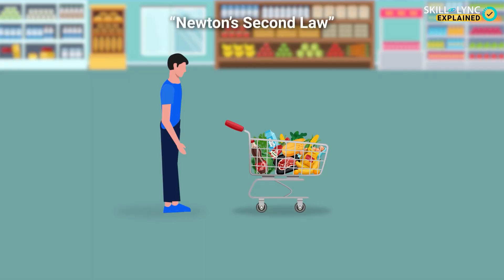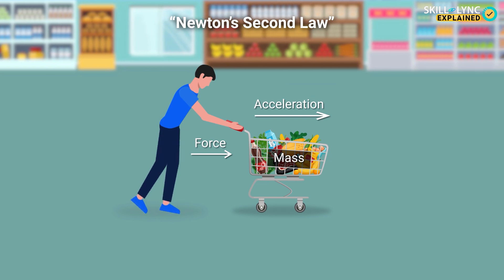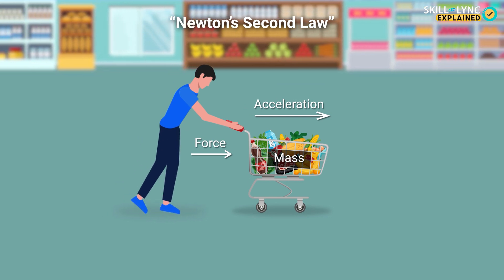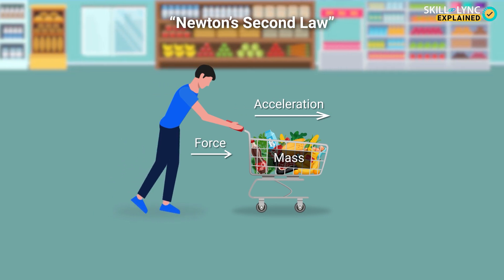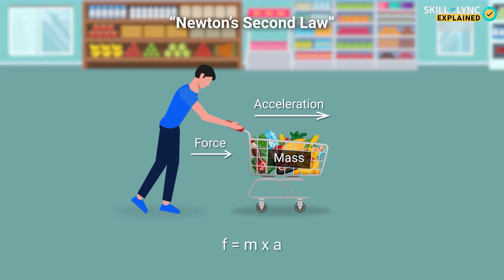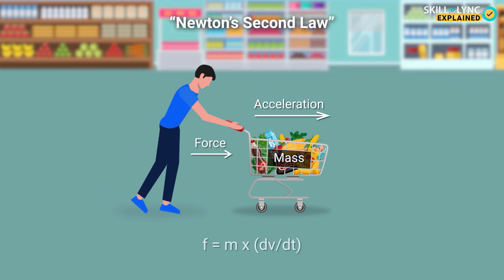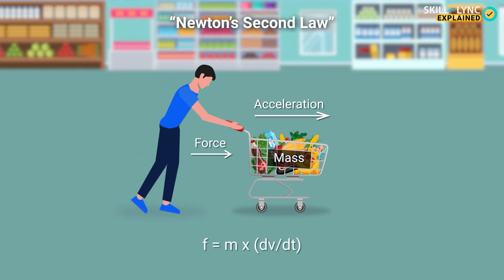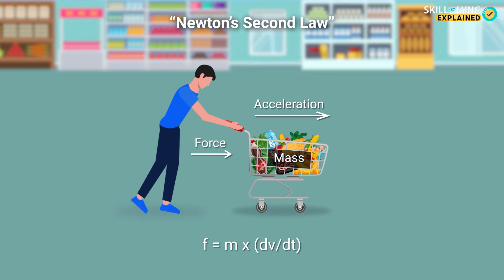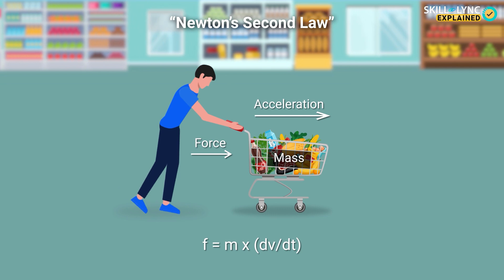If we consider Newton's second law, which states that a force acting on an object is equal to the change in momentum over time, this can be represented by the equation F is equal to M into A, where M is the mass of the object and A is the acceleration. This equation can also be rewritten as F is equal to M into dV by dt, where V is the velocity and T is the time, because acceleration is nothing but the change in velocity over time.